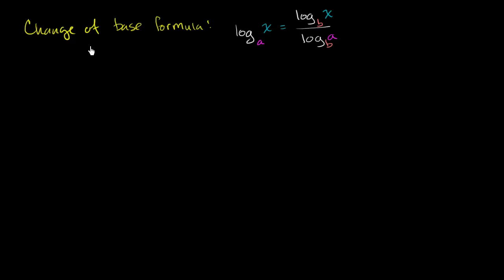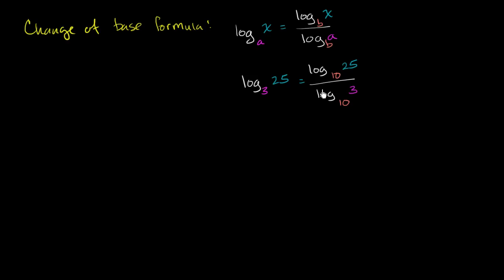If you want to figure out the logarithm base 3 of 25, you can use your calculator either using log base 10. So you could say this is going to be equal to log base 10 of 25 — most calculators have a button for that — divided by log base 10 of 3. This is an application of the change of base formula. But let's actually prove it.